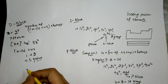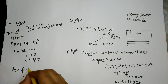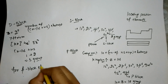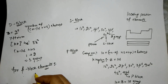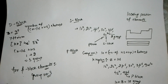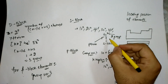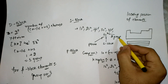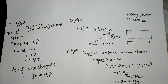For f-block elements, they always have group number 3. This is the way of predicting and locating the period, block, and group of elements in a periodic table. Thank you for watching the lecture.